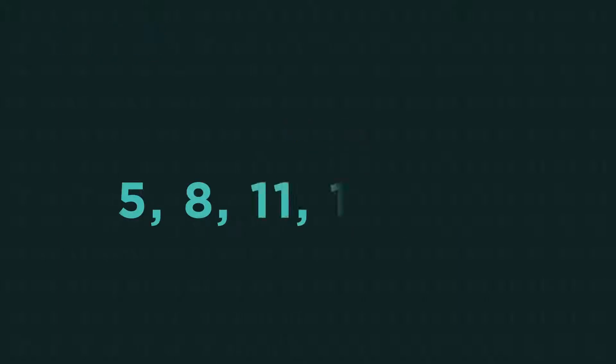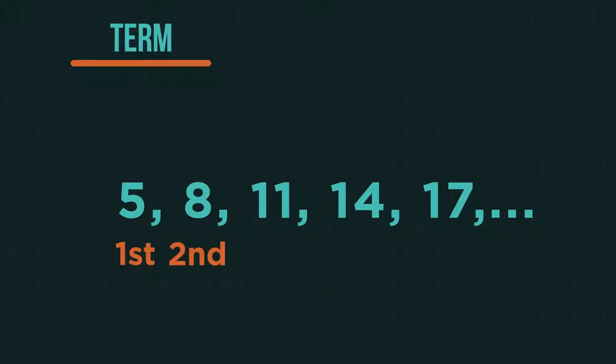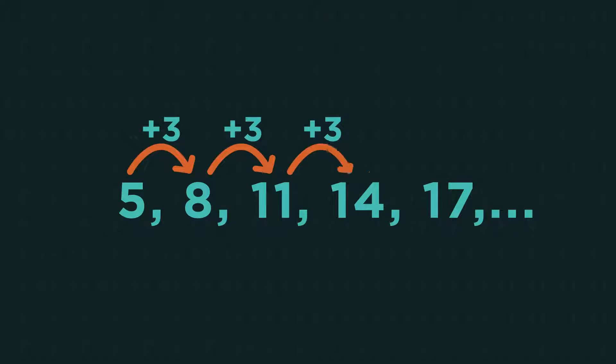Each number in the sequence is called a term. This is the first term, second term and so on. This just tells us that the sequence carries on forever. This sequence is very easy to carry on. We can easily spot it's going up by three each time. Because it's plus three every time we say it has a common difference of three.